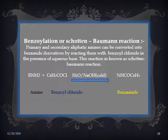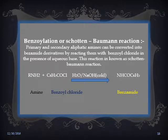This is the fourth reaction according to the list — the Benzoylation or Schotten-Baumann reaction. Primary and secondary aliphatic amines can be converted into benzoyl derivatives by reacting them with benzoyl chloride in the presence of aqueous base (NaOH). The reaction is: RNH₂ (primary amine) + C₆H₅COCl (benzoyl chloride), in the presence of cold H₂O and NaOH, gives RNHCOC₆H₅ (benzamide derivative) plus NaCl.